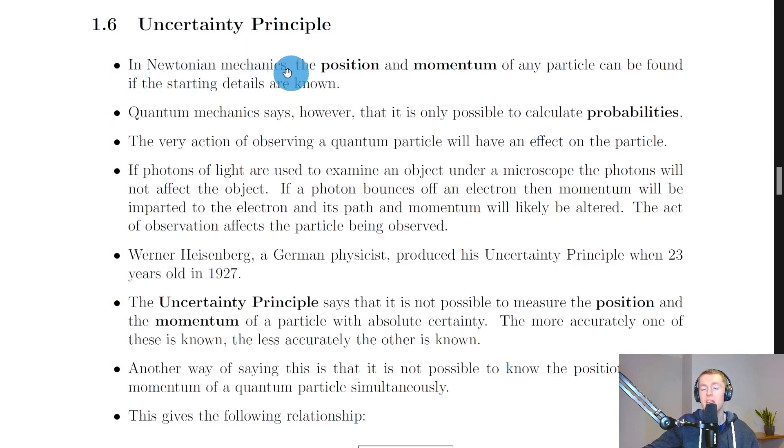It starts here by saying that in Newtonian mechanics, i.e. classical physics, the position and momentum of any particle can be found if the starting details are known.